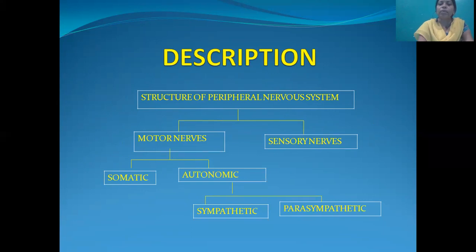Motor nerves are of 2 types: somatic and autonomic. Autonomic is also of 2 types: sympathetic and parasympathetic.